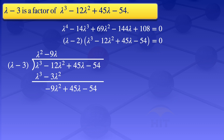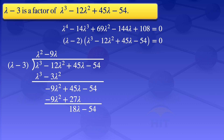Multiplying -9λ by (λ - 3) gives -9λ² + 27λ. Subtracting: -9λ² - (-9λ²) = 0, and 45λ - 27λ = 18λ. Bringing down -54, the leading term is 18λ. Dividing 18λ by λ gives 18, written as +18 on top. Multiplying 18 by (λ - 3) gives 18λ - 54. Subtracting gives 0, so the other factor is λ² - 9λ + 18.